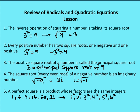A perfect square is a product whose factors are the same integers. The perfect squares are 1, 4, 9, 16, 25, and 36, corresponding to the factors 1, 2, 3, 4, 5, and 6 — so 1 squared is 1, 2 squared is 4, 3 squared is 9, 4 squared is 16, and so on.